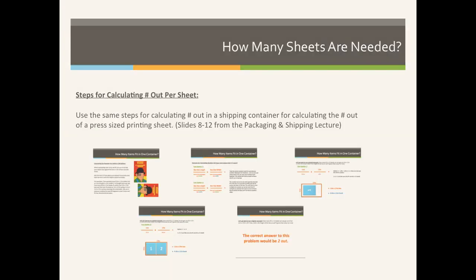I've grayed out these slides because these are the same slides that you will see in previous lectures — specifically, these slides come from the packaging and shipping weights lecture. So when we calculate the number out, we have to do the option one, option two scenario. We're going to run all of the book covers vertically, and then turn them on the side to see if we can fit more sheets that way.